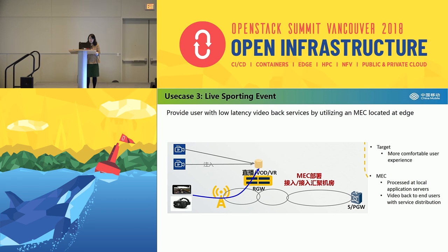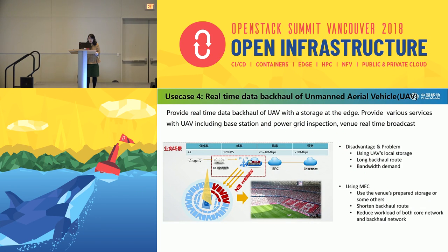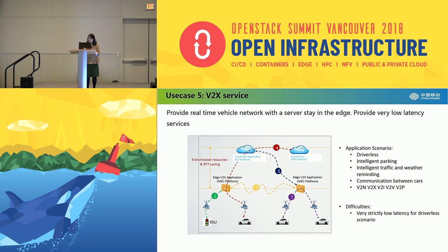The third use case is about live sporting events, providing users with low latency video backhaul by utilizing MEC at the edge. The fourth is about real-time data backhaul with UAVs, providing real-time data backhaul with storage at the edge — we have use case discussions with smart grid and base station inspection in China Mobile. The last use case is vehicle-to-everything services, providing real-time vehicle networking with servers at the edge to meet very short latency requirements.